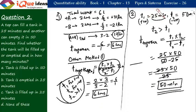The time to fill is 25 minutes and time to empty is 50 minutes for the same capacity. That means the speed of positive work is higher, hence the tank will be filled. The answer is 50 minutes.